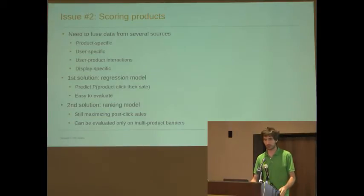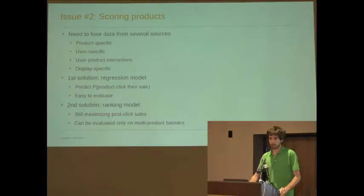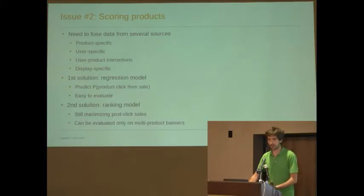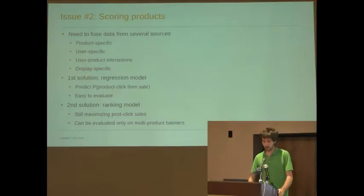We do some ads on Facebook and we know that the content that works on Facebook is not quite the same as the one we show on, say, Yahoo News. The first solution we implemented a couple of years ago was just a regression model — based on all the products you've displayed in the past, you predict a probability that the product will be clicked and that there was a sale following the click. That's very easy to train and to evaluate. The second solution, which we've started working on a couple of months ago and are going to test in the coming weeks, is full ranking models. We still have the same objective function — we still try to optimize post-click sales — but we use only multi-product banners.